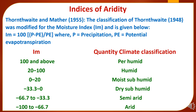Now to study the indices of aridity, which are determined by the moisture index level. If the moisture index is 100 and above, it falls under per-humid climate. If it is 20 to 100, it is humid climate. If 0 to 20, it is moist sub-humid. If -33.3 to 0, it is dry sub-humid. If -66.7 to -33.3, it is semi-arid. And if -100 to -66.7, it is called arid climate.